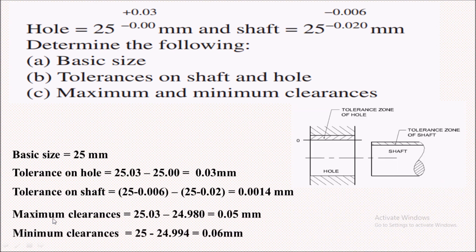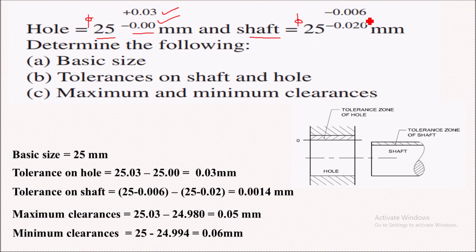You can see the problem on the screen now. Here a hole is provided with diameter 25 mm, with upper limit plus 0.03 mm and lower limit minus 0.00 mm. The shaft is provided with diameter 25 mm, with upper limit minus 0.006 mm and lower limit minus 0.02 mm.